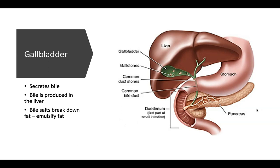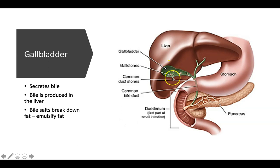Moving on to the gallbladder, a tiny organ connected to the pancreatic duct and duodenum via the common bile duct. The function of the gallbladder is to store and secrete bile. Bile is produced in the liver, and bile salts break down and emulsify fat. The main purpose of bile is to break down fat in food. Bile is produced in the liver and stored and secreted through the gallbladder.